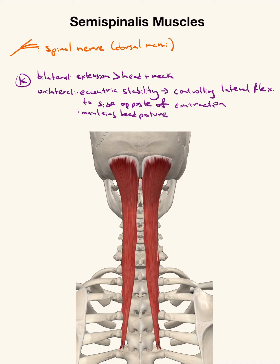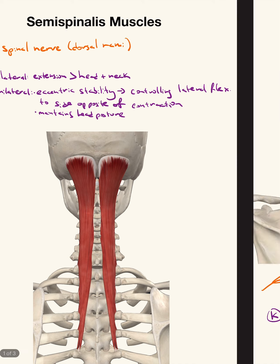Semi-spinalis muscles — 'semi' just means half. Both are innervated by the spinal nerve dorsal rami bilaterally. They extend and provide eccentric stability for controlling lateral flexion to the side opposite of contraction, and they maintain head posture.